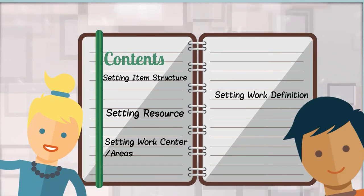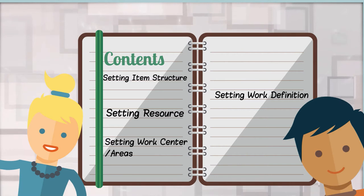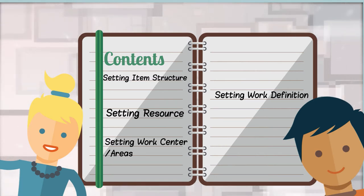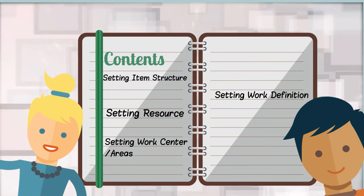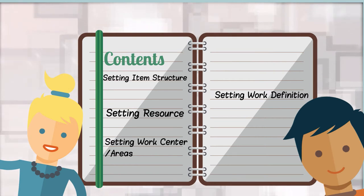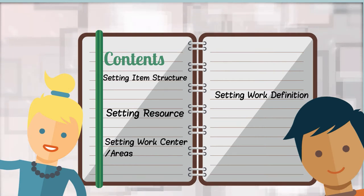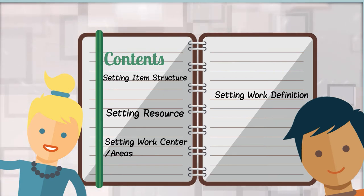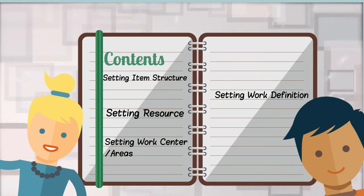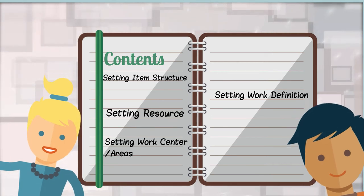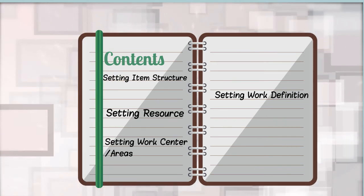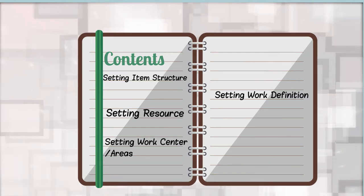Here are some important steps for setting up the business requirement. First, we will start with the setup of item structure. Then we will set up the resources for the process. After that, we will set up the work area and the work centers for the manufacturing unit, followed by the setup of the work definition.